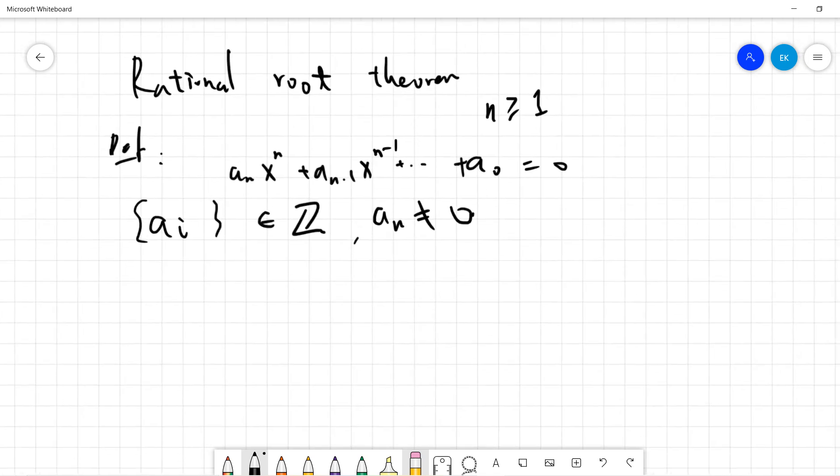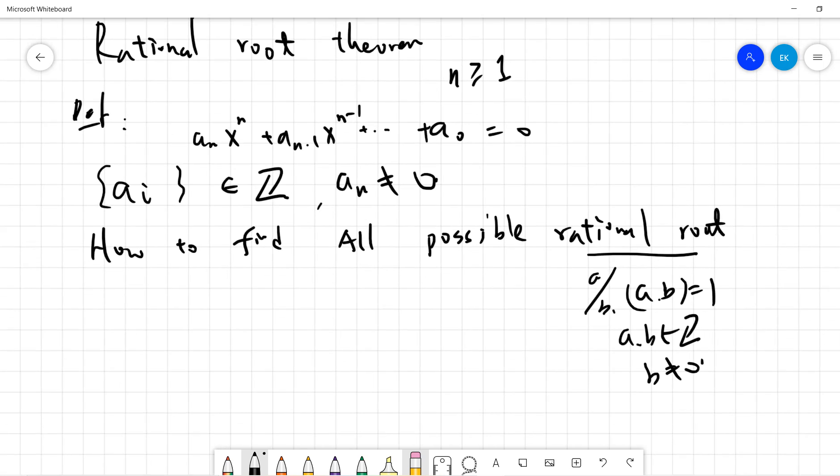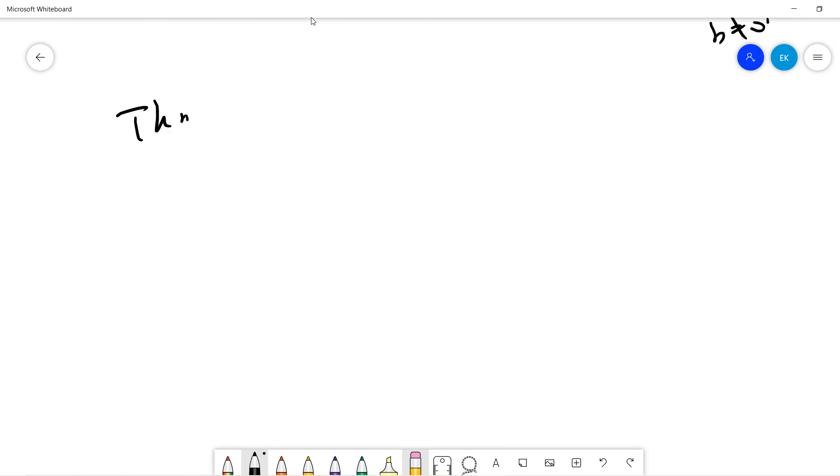So the idea is that how to detect whether there's a rational root. The key is how to find all possible rational roots. By rational I mean a divided by b, where a, b are coprime to each other and a, b are both integers, and b is non-zero.